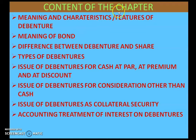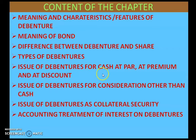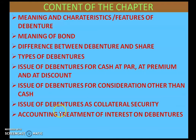The content of this chapter includes: meaning and characteristics (features) of debentures, meaning of bond, difference between debenture and shares, types of debentures, issue of debentures for cash at par, at premium and at discount, issue of debentures for consideration other than cash, issue of debentures as collateral security, and accounting treatment of interest on debentures.